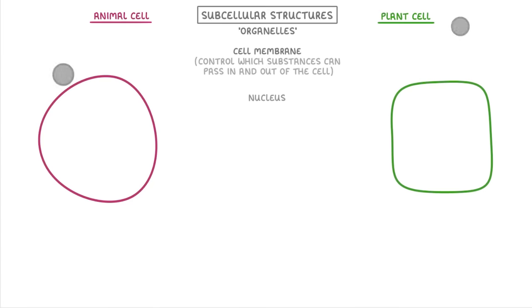Both types also have a nucleus, which contains the genetic material or DNA of the cell. And so it effectively controls the activities of the cell as well.